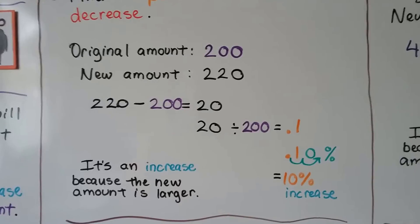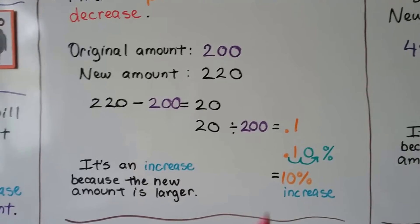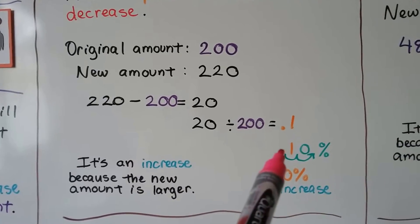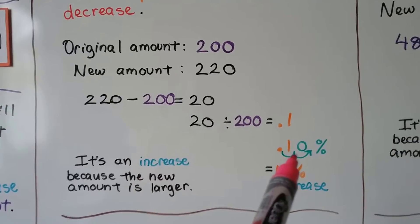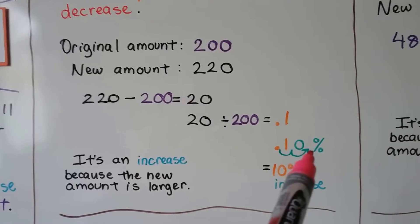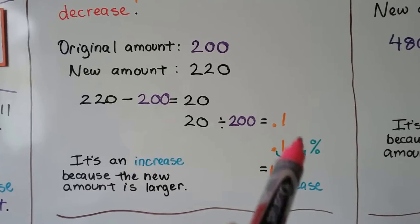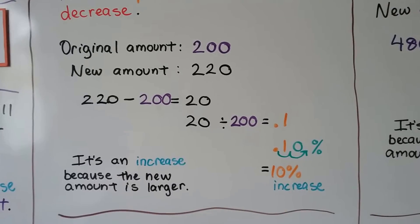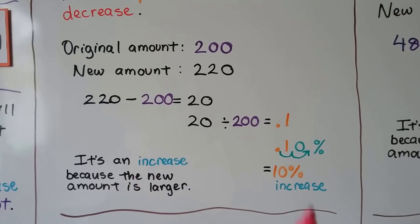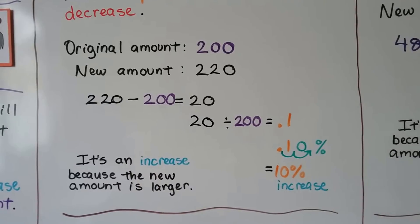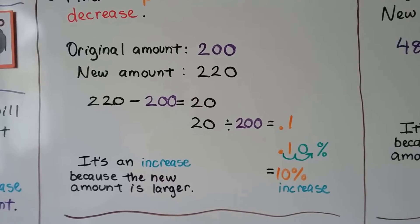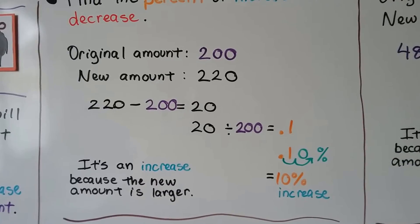It needs to be changed to a percent, so we move the decimal back two hops — one, two — which leaves an open place value that we fill with a zero as a placeholder. We put a percentage sign on, and we have a 10% increase.